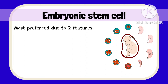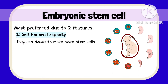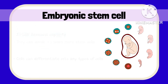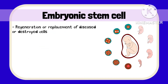Embryonic stem cells are the most preferred because of two important qualities. The first is self-renewal capacity — they can divide to make more stem cells to maintain the required amount. The second important feature is pluripotency — these cells can differentiate into any type of cell, which makes them perfect for creating specialized cells in our body.